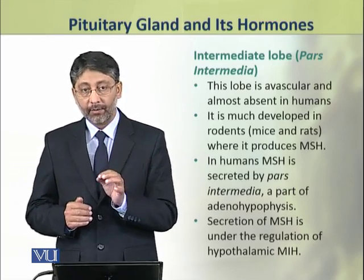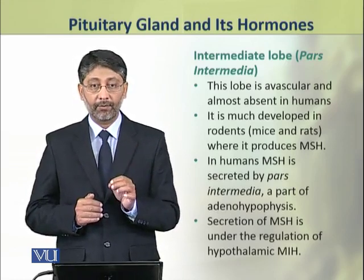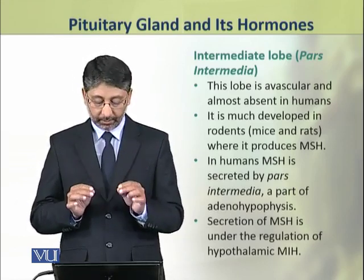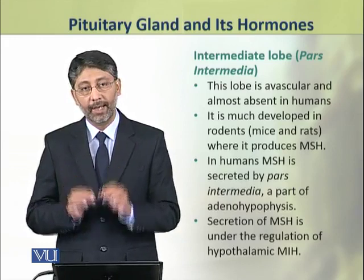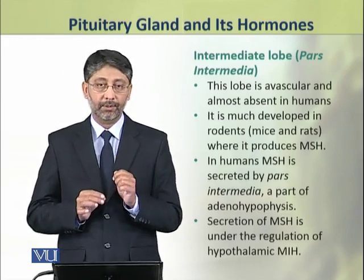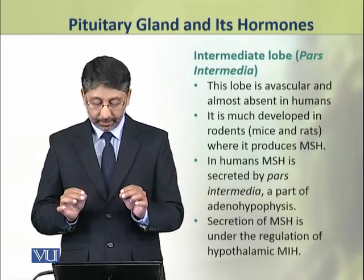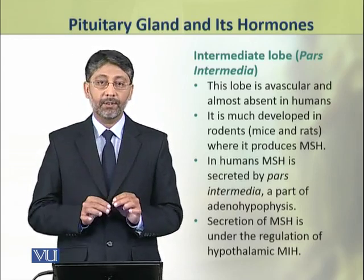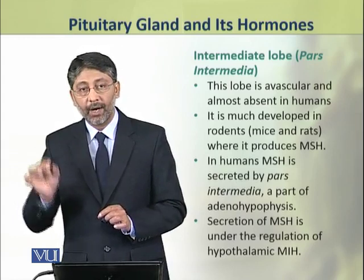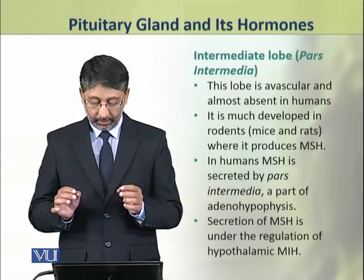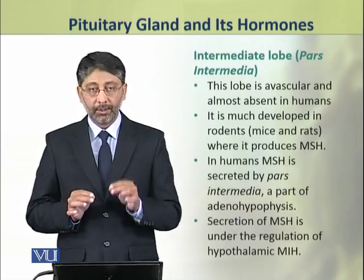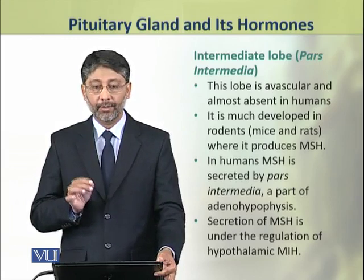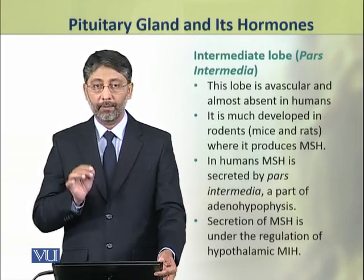However, in rodents and many lower vertebrates, this lobe of pituitary is highly developed and produces the hormone MSH. In humans, MSH is secreted by the pars intermedia, which is considered as a part of anterior pituitary. The secretion of MSH is under the regulation of hypothalamic MIH, that is, the melanocyte inhibiting hormone.